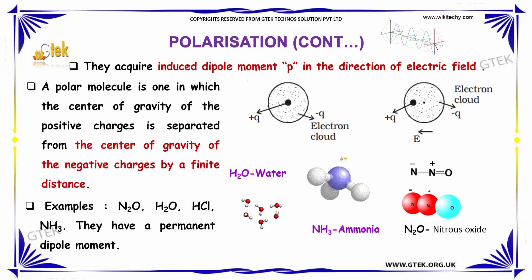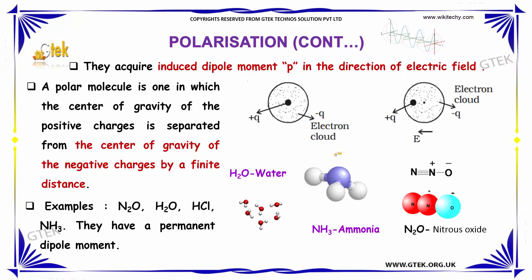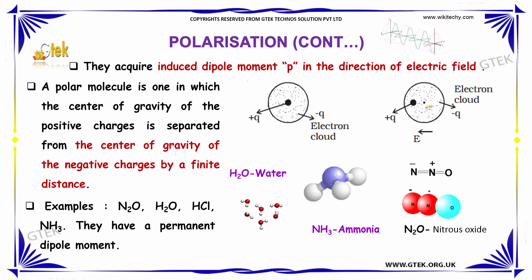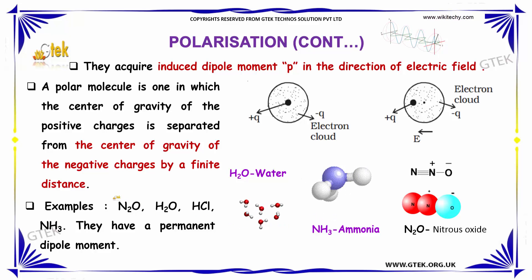A polar molecule is one in which the center of gravity of the positive charges is separated from the center of gravity of the negative charges by a finite distance. Examples include N₂O, H₂O, HCl, and NH₃. These are examples of molecules with a permanent dipole moment.